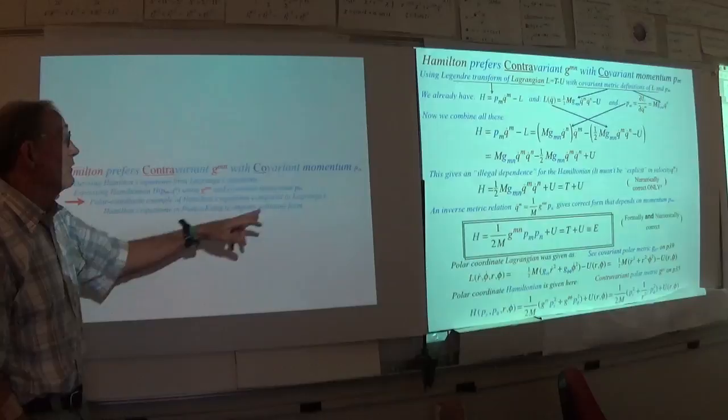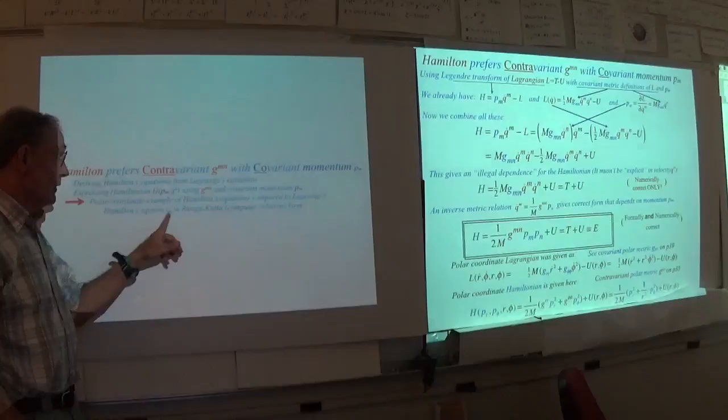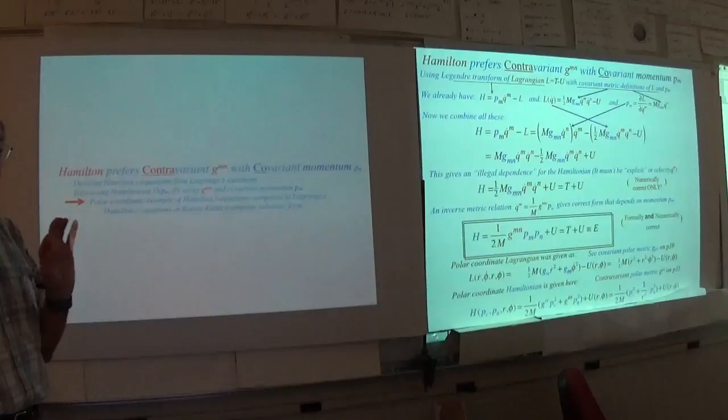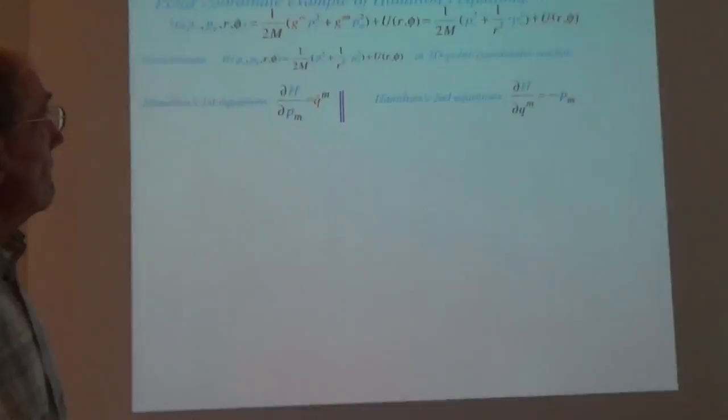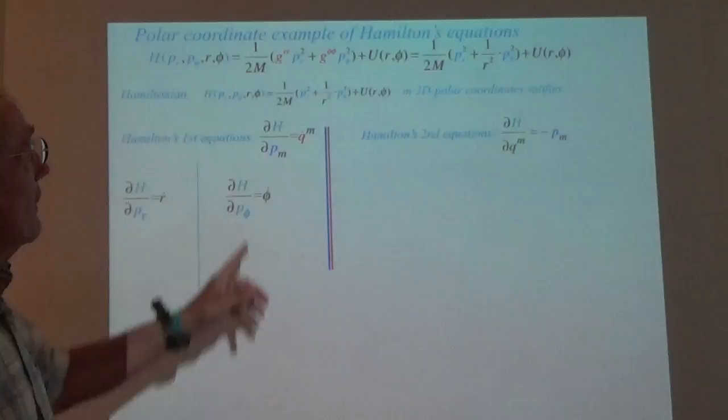We also want to show that Hamilton's equations go straight into a computer solution form. That could be nice, particularly since you're going to be using variables that are very likely to be part of a conserved Hamiltonian system. So we've got Hamilton's first equation and Hamilton's second equation — let's go to work. The partial derivative of H with respect to P.